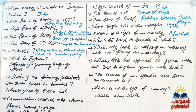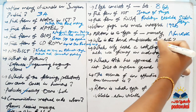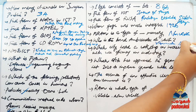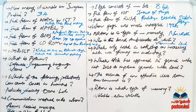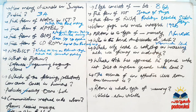Who is the brand ambassador of WWF? The answer is Vishwanathan Anand. Which city hosts a workshop on increasing water use efficiency in industry? The answer is Pune.